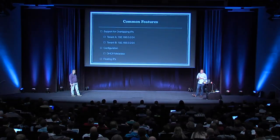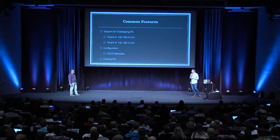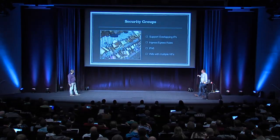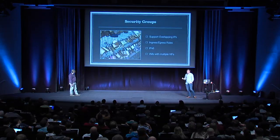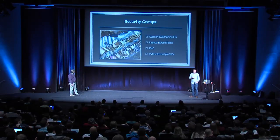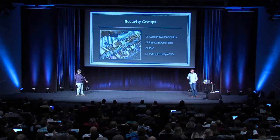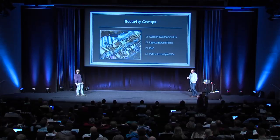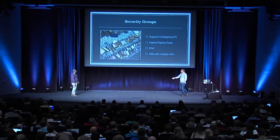Other common features include floating IPs — if you have RFC 1918 space and want to expose different VMs to the public internet, you have the ability to NAT and float traffic. We also provide support for security groups, including one key difference between the Neutron implementation and the original Nova network one: support for overlapping IPs. This also provides the ability to create security group rules for ingress and egress, IPv6 support, and support for VMs with multiple VIFs so you can apply different security group policies to each VIF.